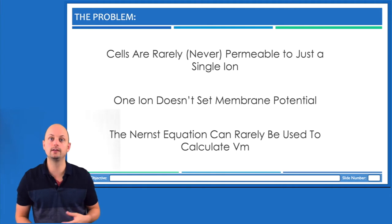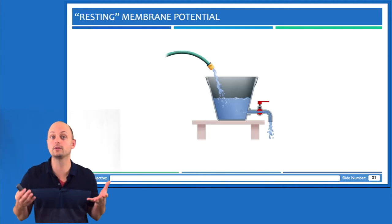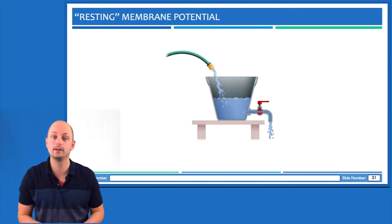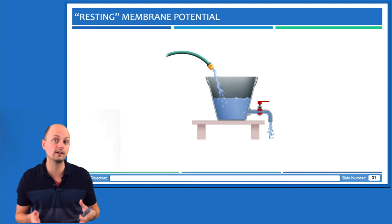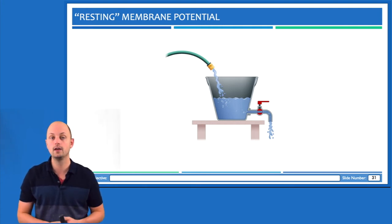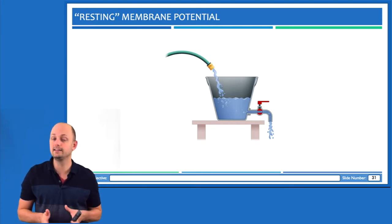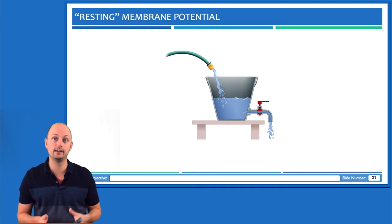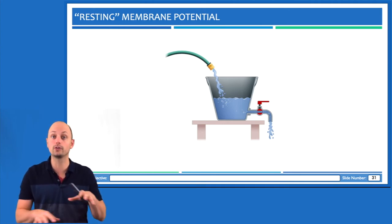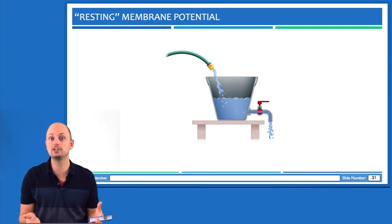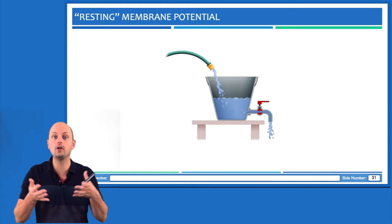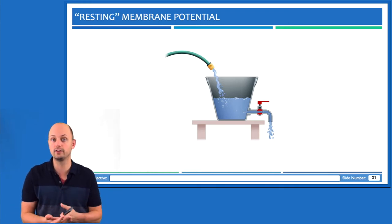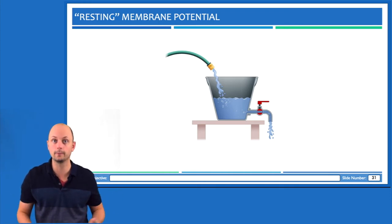Throughout this unit I've been using the term steady state to describe a point where the net flux of an ion is zero. A steady state is not the same thing as an equilibrium — it's not a point where there's no movement of ions. Instead, it's a condition where all the ions that are moving have equal and opposite movements to each other, so the net flux is zero.